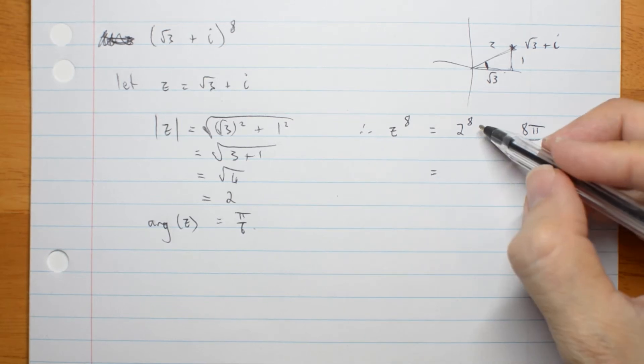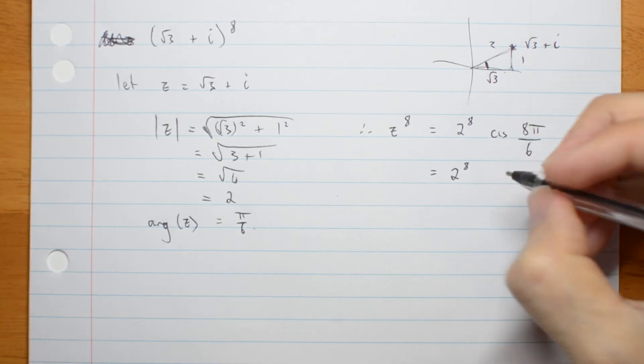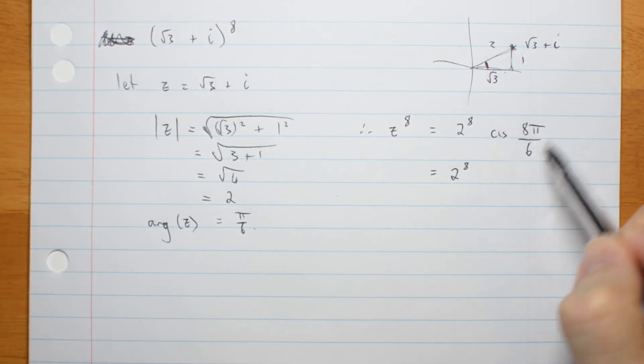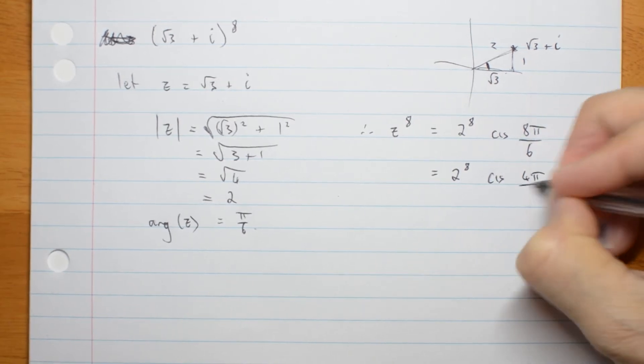Now, 2 to the 8 is a big number. Let me leave it like that for now, I'm going to work out its numeric value in a minute. First I want to work this out. This is 4 pi on 3.